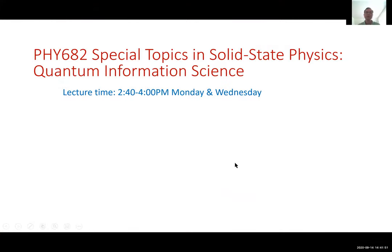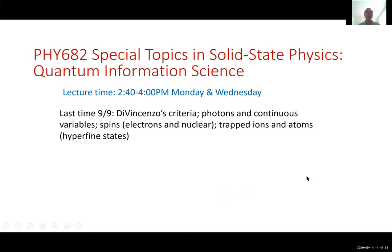We'll continue from last time. Let me briefly describe what we talked about last time. We talked about DiVincenzo's criteria — there are five of them — coherence, universal gate measurement, preparation, etc. We also talked about a few physical systems that can be used to implement quantum information processing.